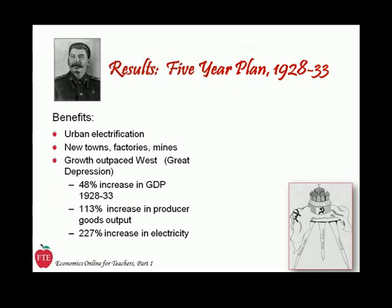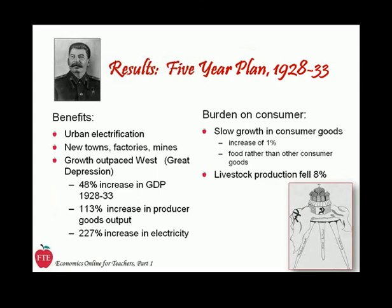At the same time, note that the choices about resource allocation imposed a cost. Consumer goods production grew by only 1% — most accurately conceived of as a small increase in food supplies rather than any other type of consumer good. Livestock production actually fell by 8%. The bottom line: life wasn't worse, and there seemed to be reason for hope. Both contributed to strong support for the regime.